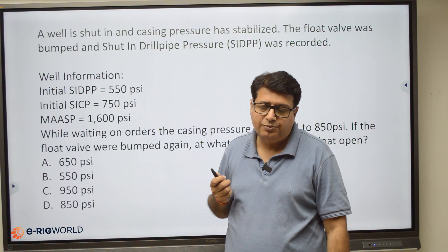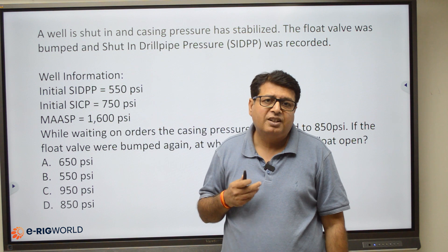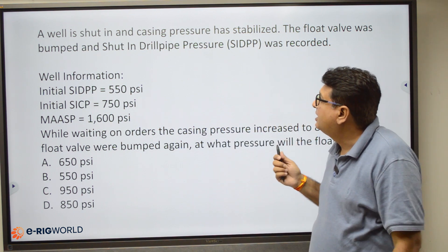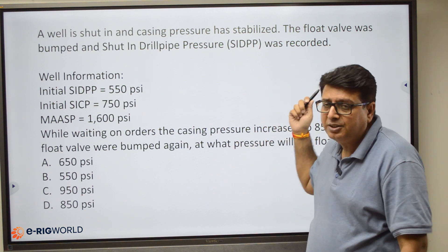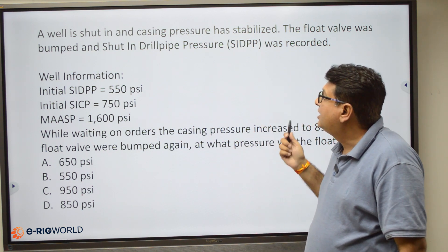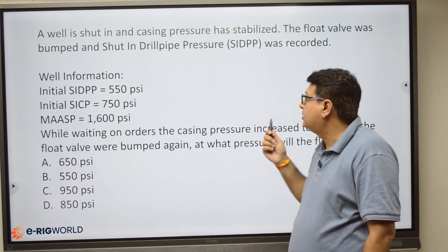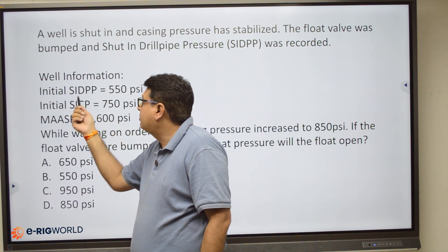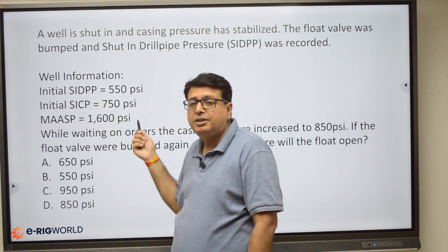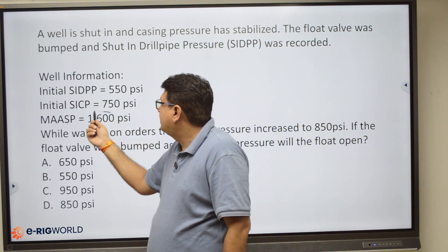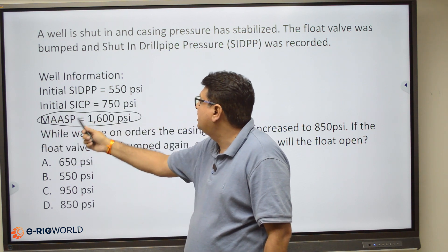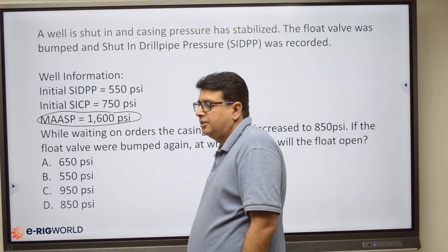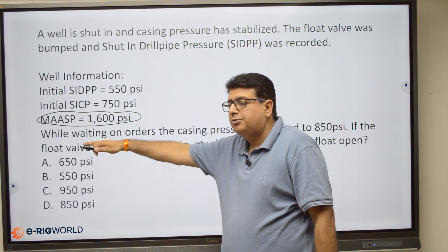Here's a question regarding migration in a closed well building. The well was shut in on a gas kick, casing pressure was recorded and stabilized, and they bumped open the float in the string. The initial drill pipe pressure was 550 psi and the initial casing pressure was 750 psi.